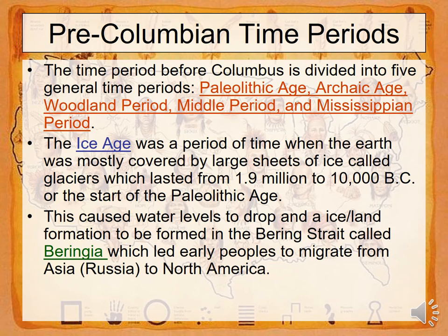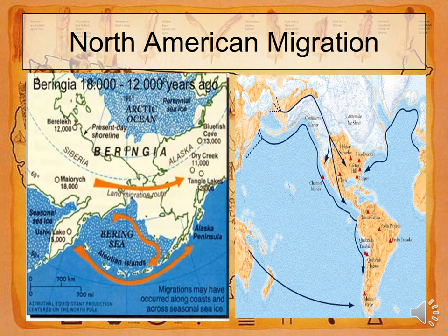Historians love to put things into time periods. We look at settlements in very different ages, like the Paleolithic, Archaic, Woodland, Middle, and Mississippian period. We look at the Ice Age, which was a period in which most of the world was covered in ice. This led to different land formations and also people's movements.